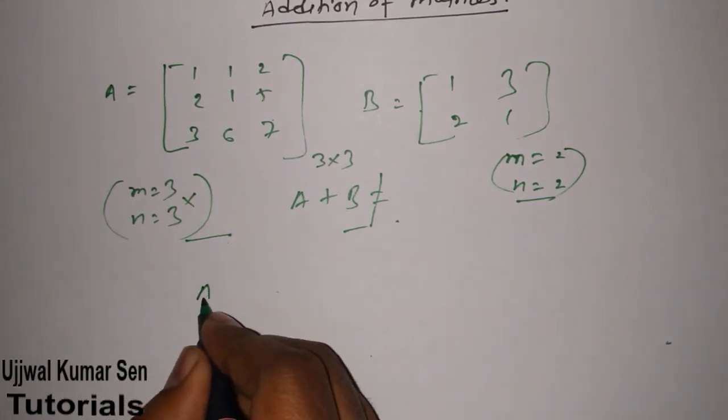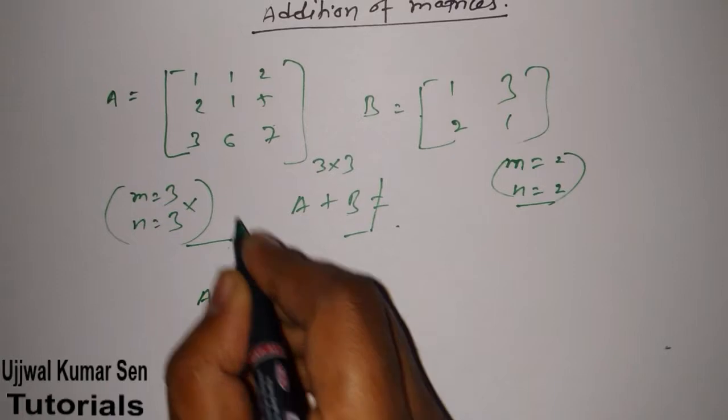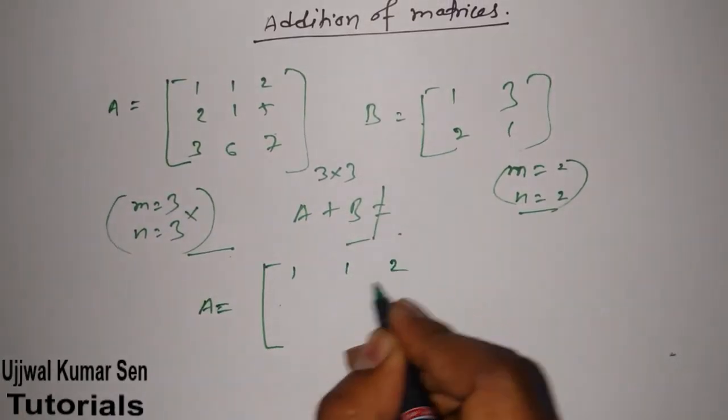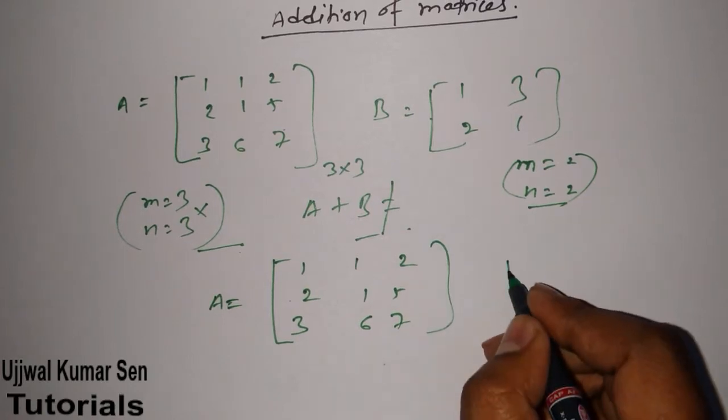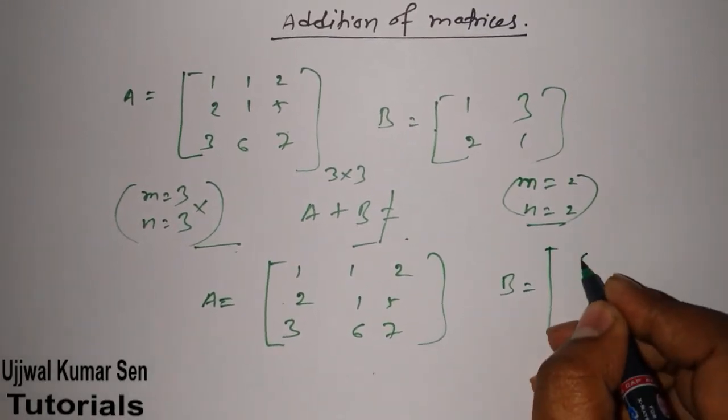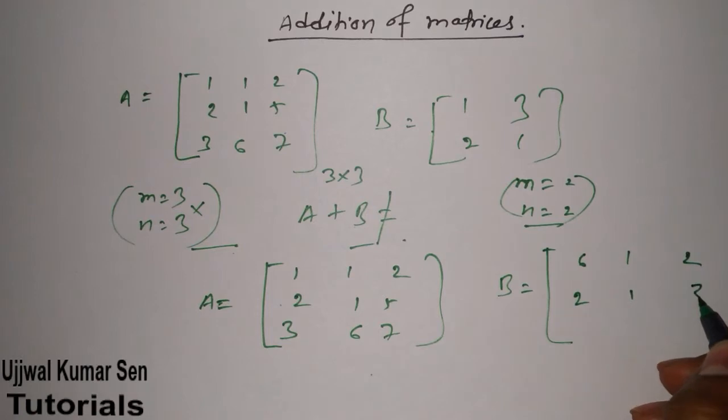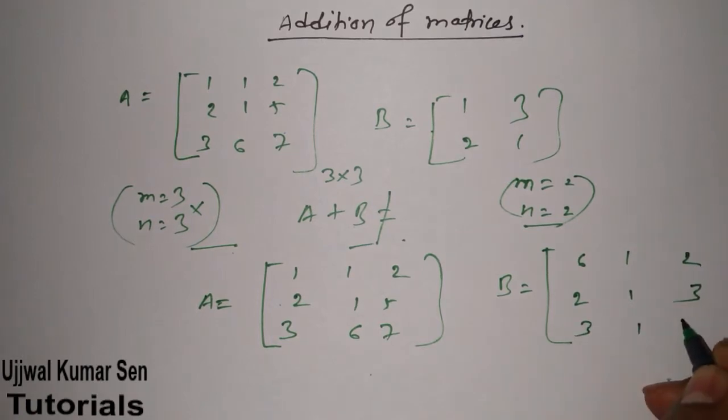Now suppose that we are having A is equal to this one only 1, 1, 2, 2, 1, 5, 3, 6, 7. And B is equal to 6, 1, 2, 2, 1, 3, 3, 1, 2.